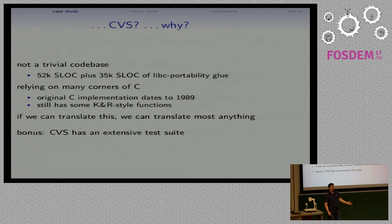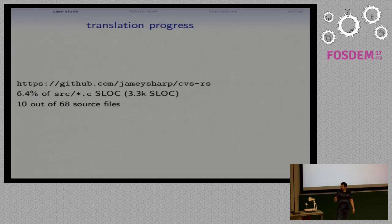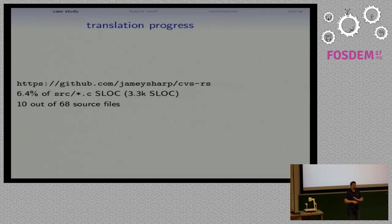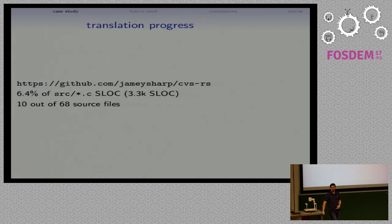As a nice bonus, CVS does have an extensive test suite, which has turned out to be really useful. So let me tell you where I've gotten so far in this case study. 6.4% of the source lines of code have been translated to Rust, which doesn't sound like much, but I went for the things I could do in a couple of days and the rest of my time was spent fixing Corrode bugs. That's over 3,000 lines of code — not counting blank lines and comments — and 10 out of the 68 source files that are the core of CVS.